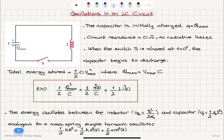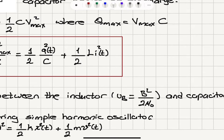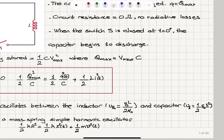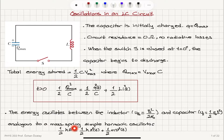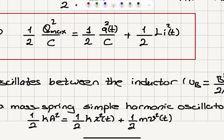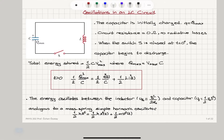We will have energy oscillating between the inductor, where the energy density is B squared over 2·mu zero — that is the energy per volume — and the capacitor, which stores energy one-half epsilon zero E squared per volume. This is analogous to a mass-spring simple harmonic oscillator, where the total energy one-half K·A squared is distributed between potential and kinetic energy terms: one-half K·x squared plus one-half M·v squared at an arbitrary time T.